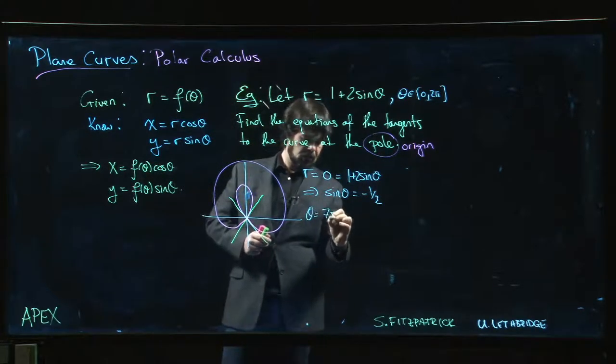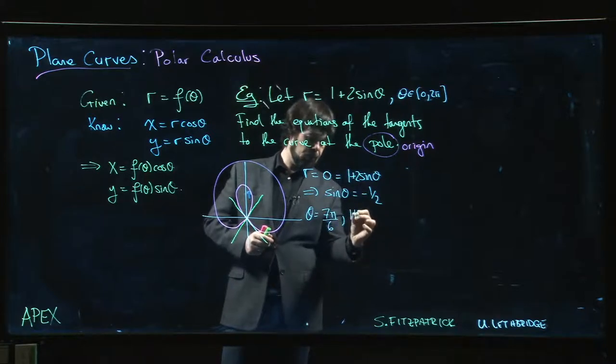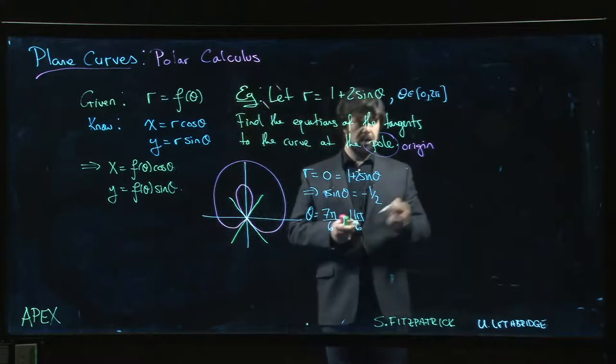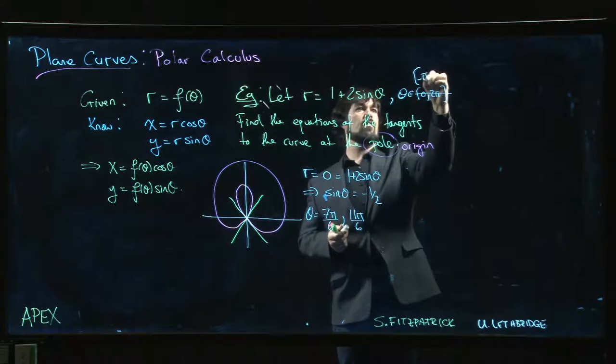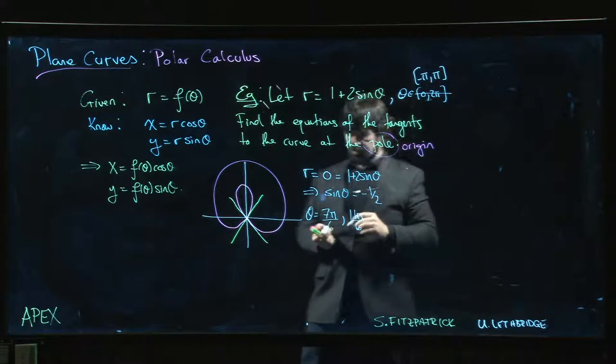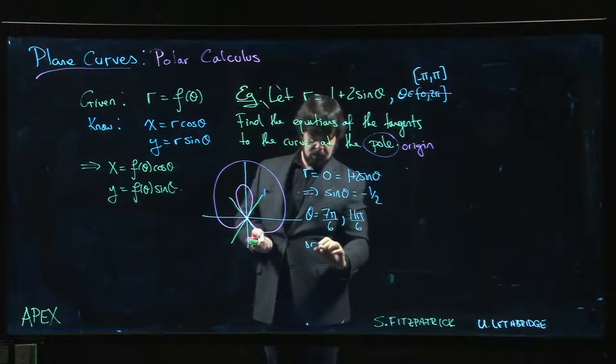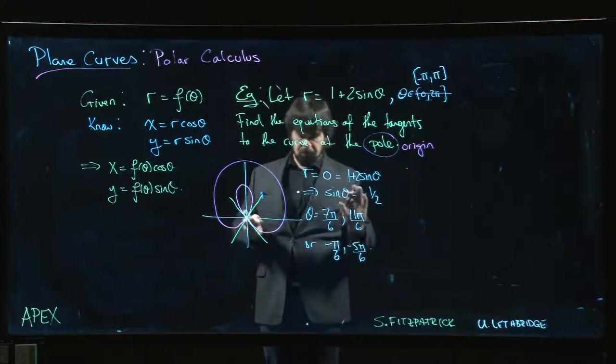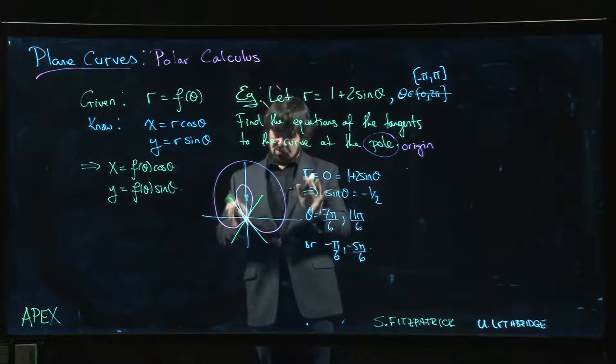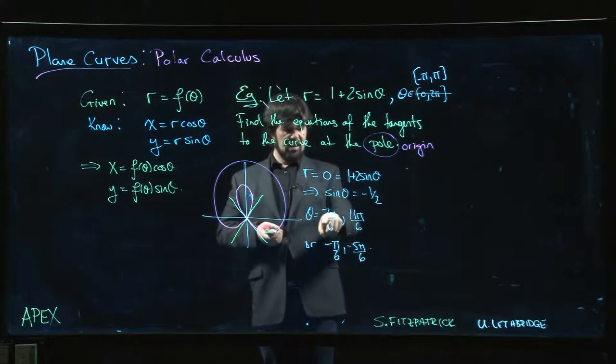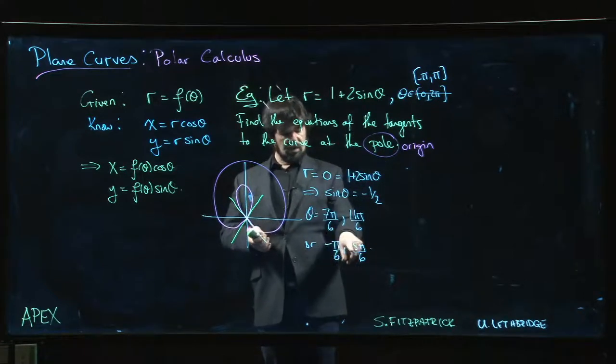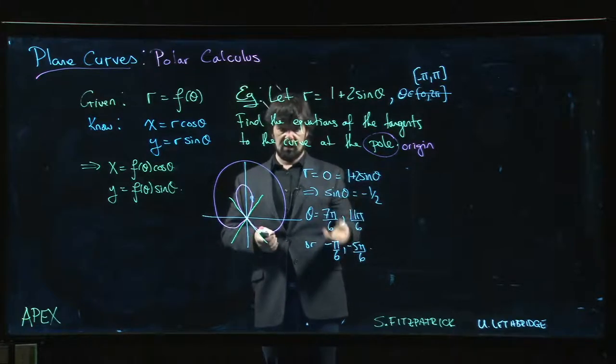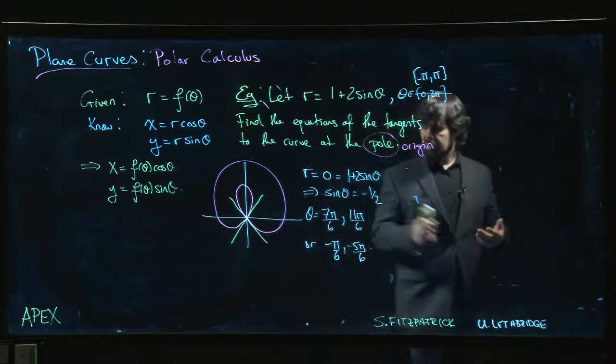So theta is seven pi over six or 11 pi over six. You might prefer to instead use minus pi to pi as your interval, in which case these would be minus pi over six and minus five pi over six. It's up to you which way you want to do it. You'll get the same answer either way, of course. This is just a matter of personal taste. Whether you like the slightly smaller fractions but the negative in front, or do you rather avoid the minus signs and settle for the larger fractions. All right, so we have our two angles.